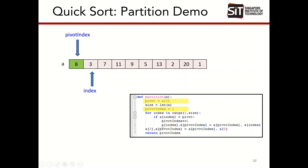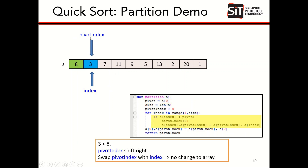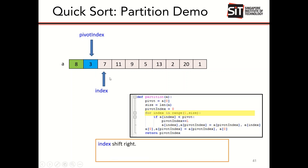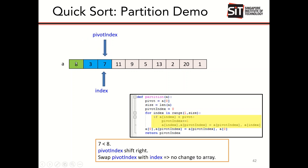So this is essentially what the partition algorithm does. It first sets the first element as the pivot value. Then, through a for loop, it moves the index along and tries to insert the pivot value of 8 into the correct location in the array — everything to the left will be smaller than 8, everything to the right will be larger than 8. In the first step, the index is at position one. If the value is less than the pivot value of 8, the pivot index simply increments.